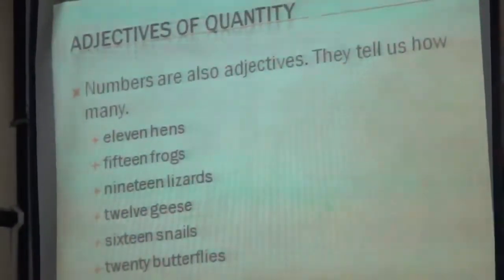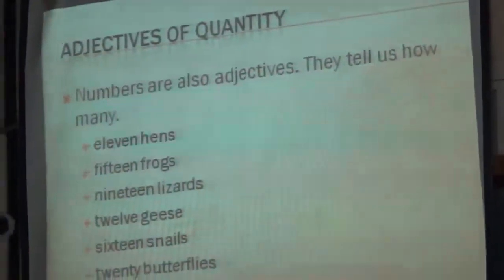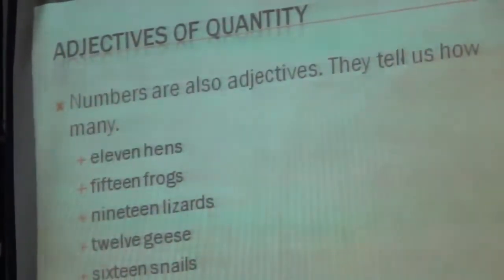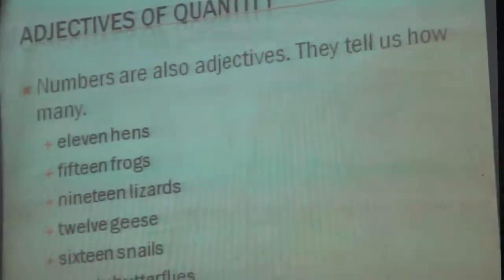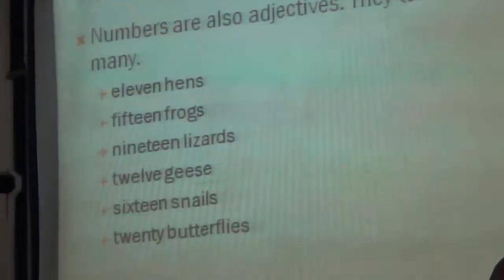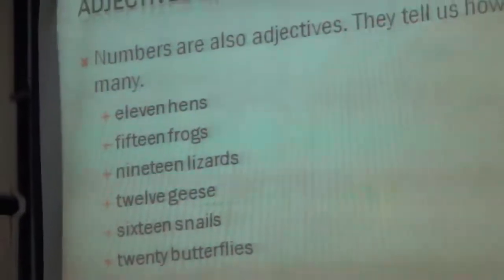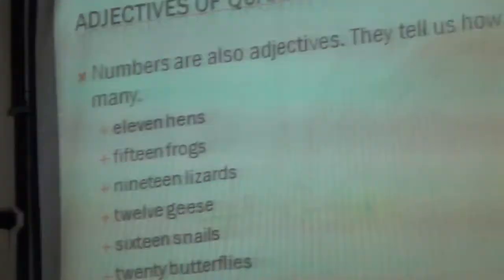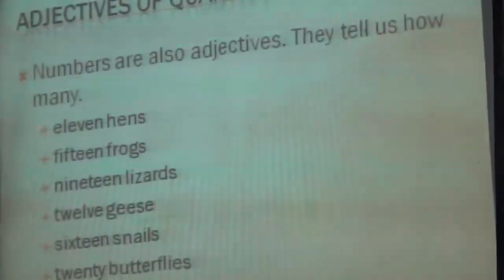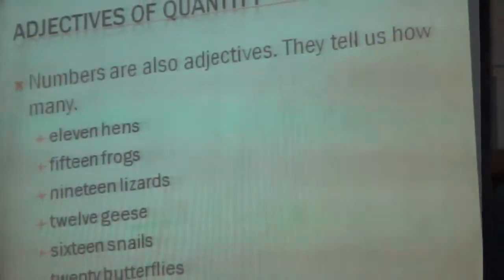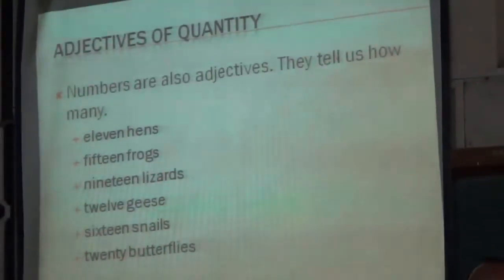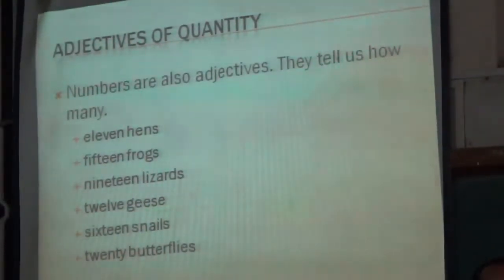I will now request a student to read this slide loudly for us. Adjectives of quantity — numbers are also adjectives. They tell us how many. One length, fifteen tops, nineteen degrees, twelve keys, sixteen legs, twenty butterflies. Many a times you put a number and that behaves as an adjective.